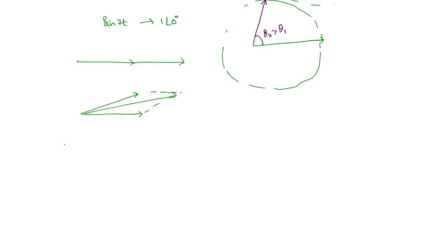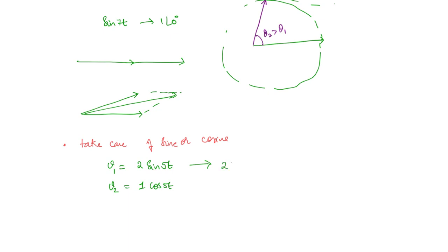Another important point: you have to take care whether it is sine or cosine. For example, let v1(t) = 2 sin 5t and v2 = 1 cos 5t. You should not write both as 2 ∠ 0° and 1 ∠ 0° — that is wrong, because here you have sine and here you have cosine. Whenever writing in phasor form, ensure all functions are either all in sine or all in cosine. So if we convert v2 in terms of sine, what do we get? v2 = 1 sin(5t + 90°).